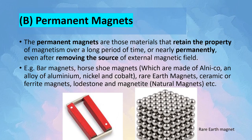Now let's look at permanent magnets. Permanent magnets are those materials that retain their property of magnetism over a long period of time, or nearly permanently. They retain this magnetic field even after removing the source of the external magnetic field. Most permanent magnets are artificial magnets. Examples are bar magnets, hostomagnets which are made of alnico — an alloy of aluminium, nickel and cobalt — rare earth magnets, ceramic or ferrite magnets, and lodestone and magnetite, which are some examples of natural permanent magnets.